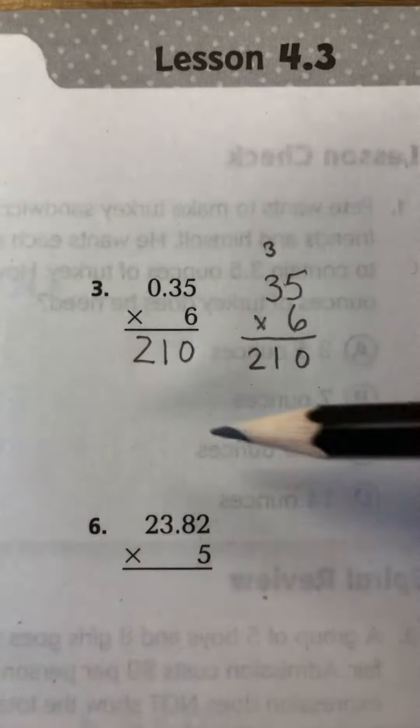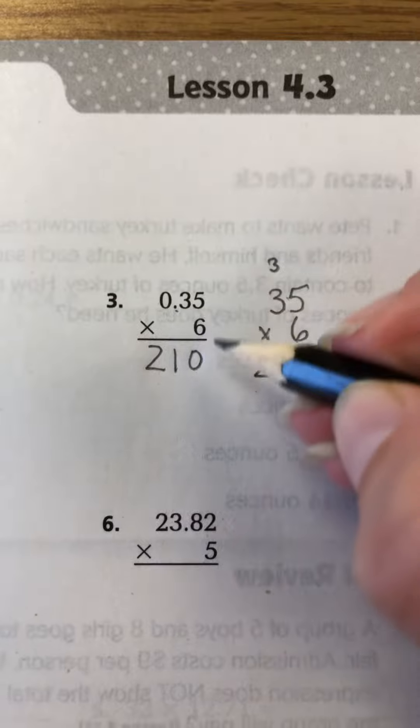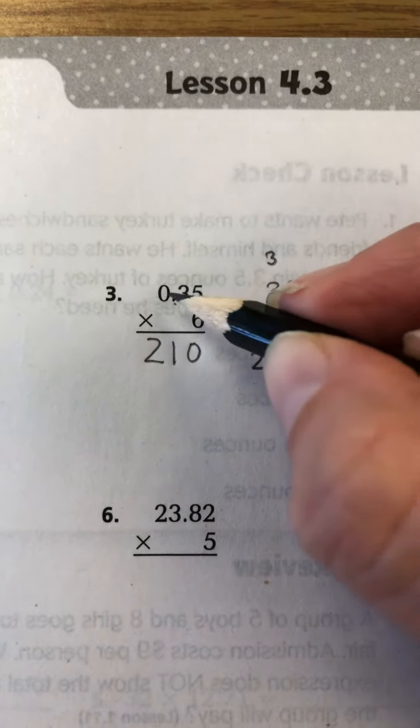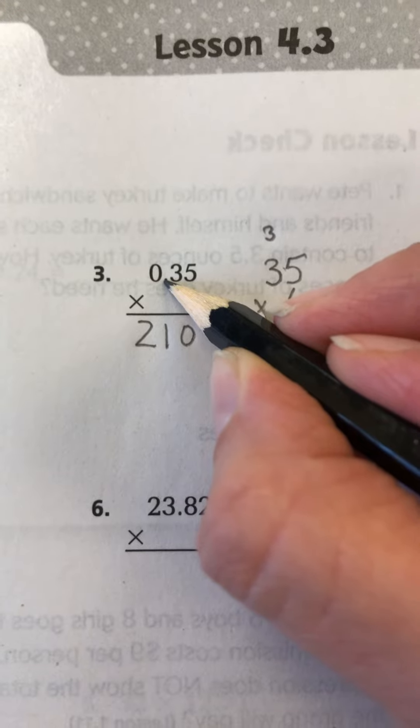But I need to put the decimal point back in. So here we go. Go back to the decimal point that you see. Remember, this is a whole number, so it doesn't have it. So I'm going to focus up here.